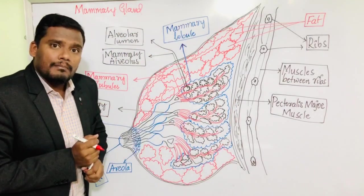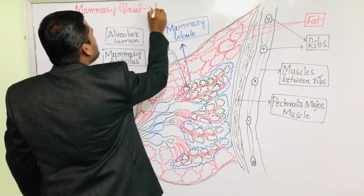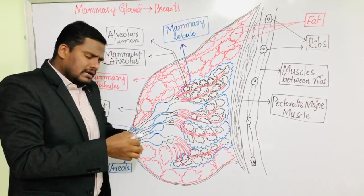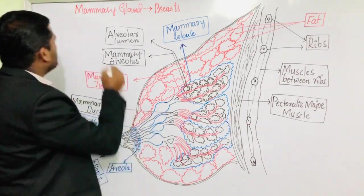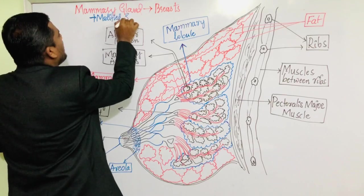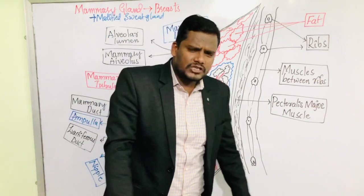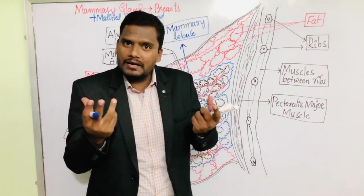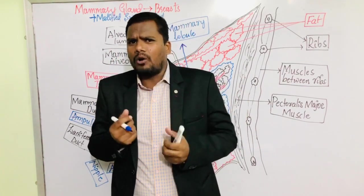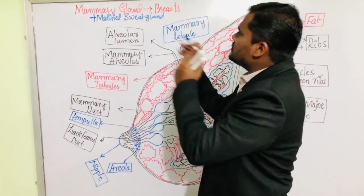The responsibility of the mammary gland in females is the secretion of milk to feed the young one after delivery. That is why female mammals have functional mammary glands. These mammary glands are generally referred to as breasts, and these breasts or mammary glands are modified sweat glands — technically called sudoriferous glands — along with sebaceous glands.